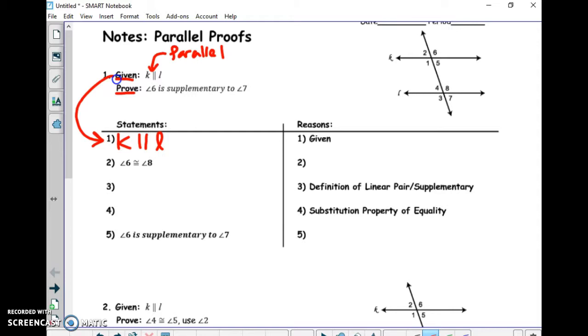What's my reason? How do I know that's true? Off to the right is where we write our reasons. It's already filled in for you. It is given. Step one is always given, and it's whatever they give you.